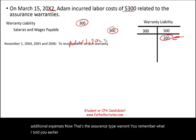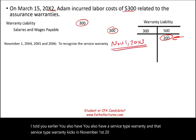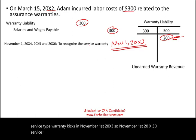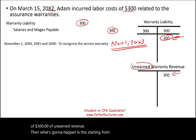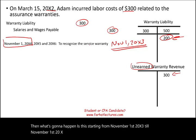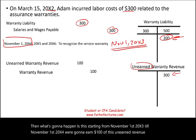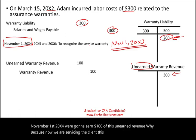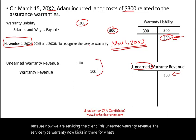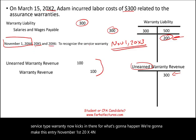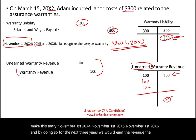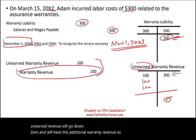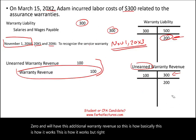Now for the service type warranty: remember we have $300 of unearned warranty revenue. The service type warranty kicks in on November 1st, year X3 — when the assurance warranty expires. Starting November 1st, X3 through November 1st, X6, we will earn $100 of that unearned revenue per year. Each year we debit unearned warranty revenue $100 and credit warranty revenue $100. Over three years, the unearned balance goes to zero and we recognize the full $300 as revenue.